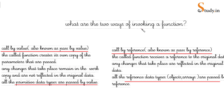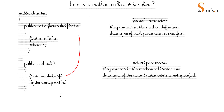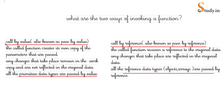There are two ways of invoking a function: call by value (pass by value) and call by reference (pass by reference). In call by value, the called function creates its own copy of the parameters; any changes remain in the copy and are not reflected in the original data. In call by reference, the function receives a reference to the original data, so changes are reflected in the original. All primitive data types are passed by value; reference data types — objects, arrays, strings — are passed by reference.